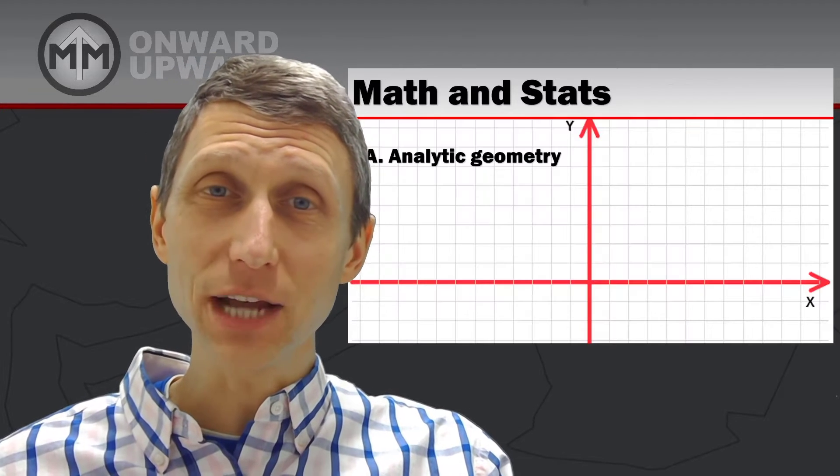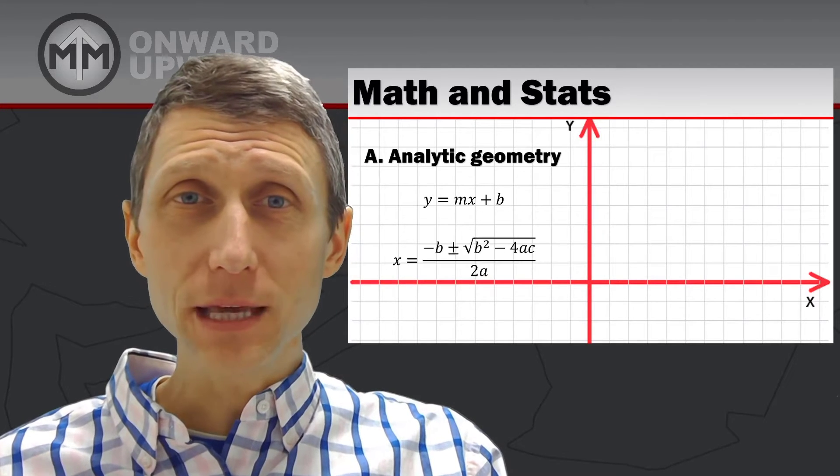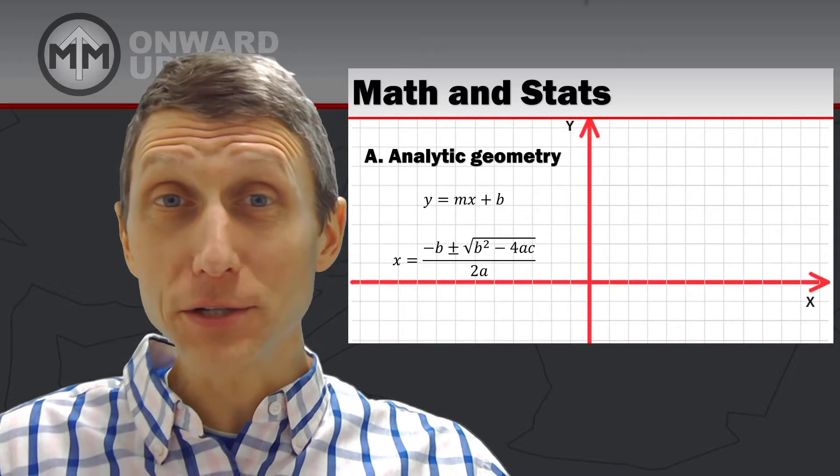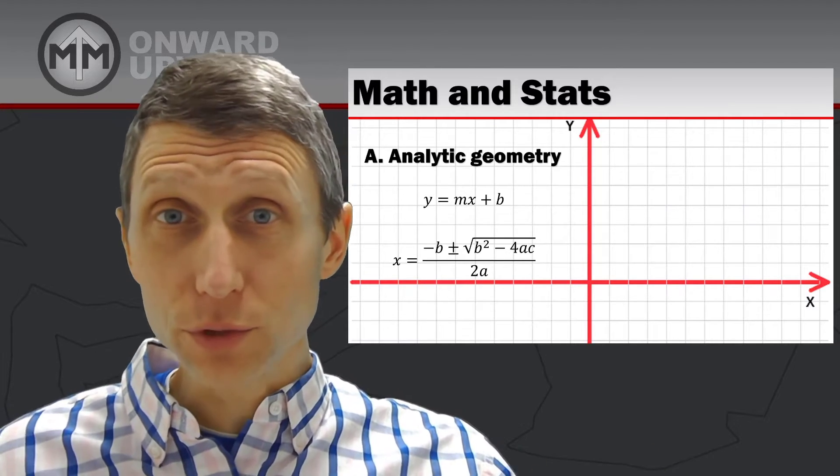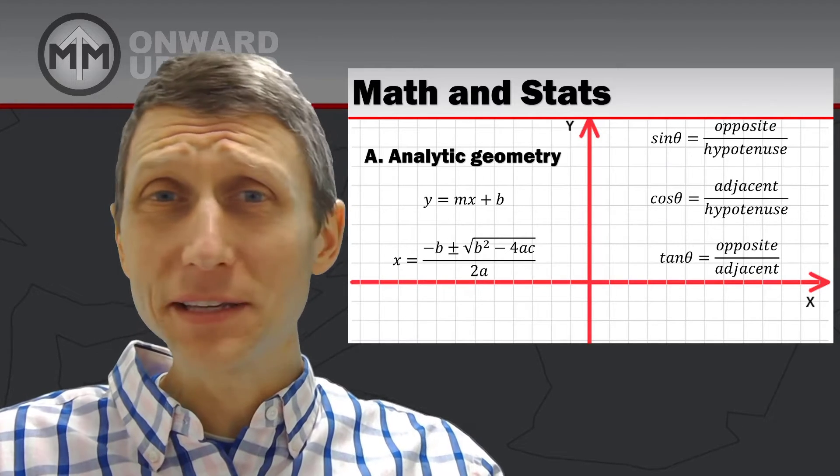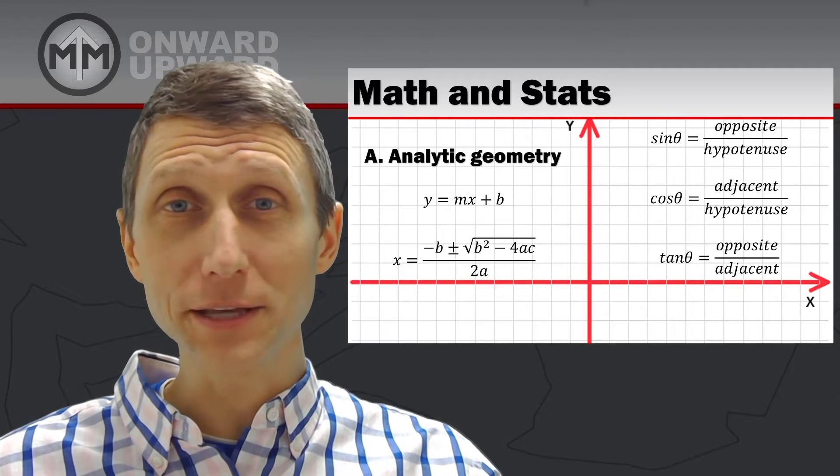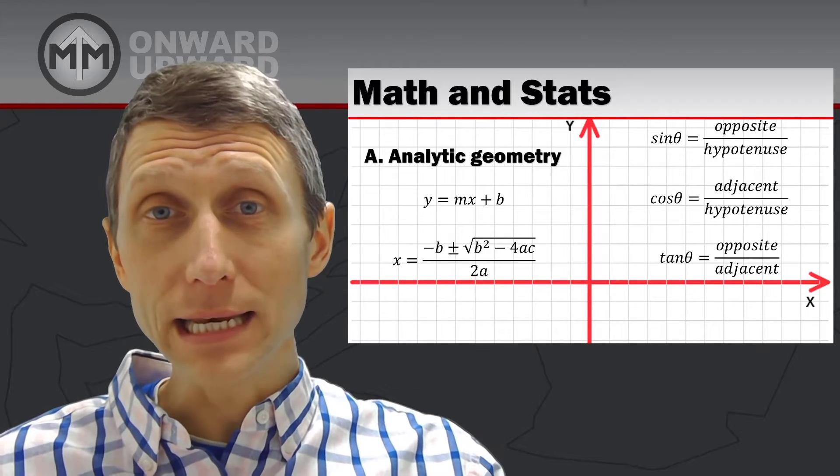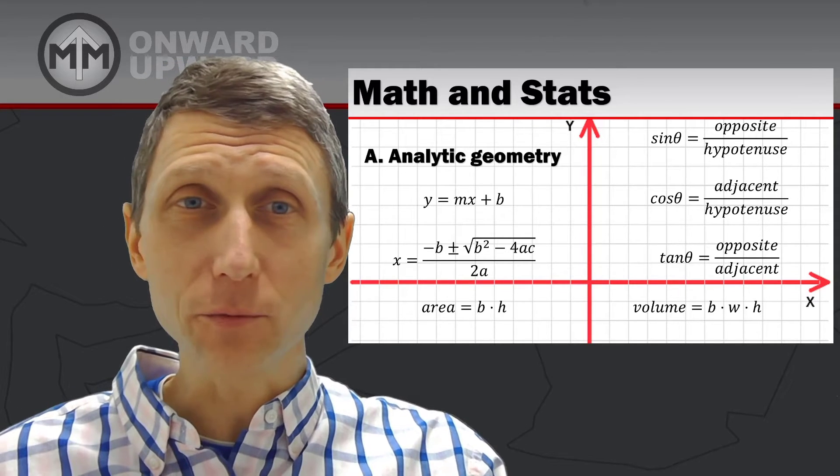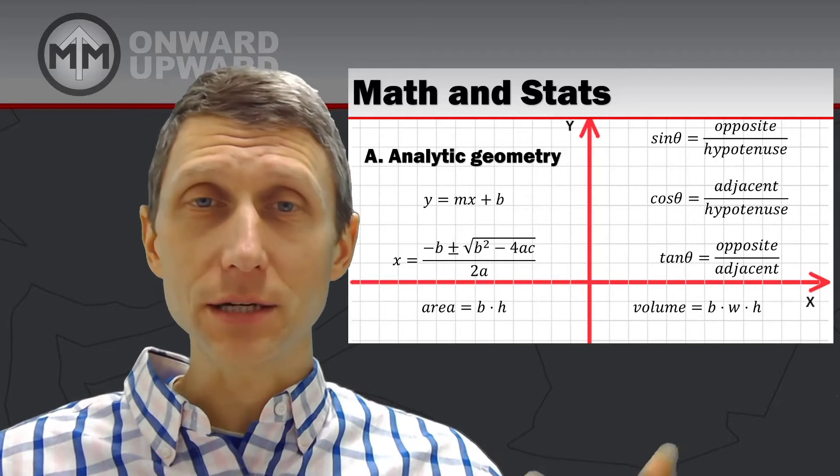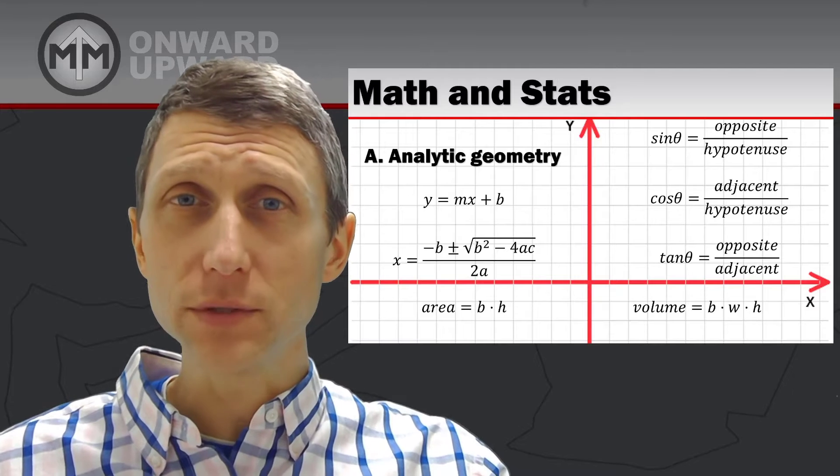So when you get into things like analytic geometry, I'd say definitely take a look at lines and functions and slopes and all those types of things. When you take a look at quadratic and quadratic formulas and how to find the roots of an equation, those types of things. Definitely know your basic trig. The basic trig is foundational for things like statics. It's something that you really need to understand and get into. And then other things like area formulas or volume formulas, or cones or conic sections or different things like that are all in the FE reference handbook. So know where they are, know how to use them.